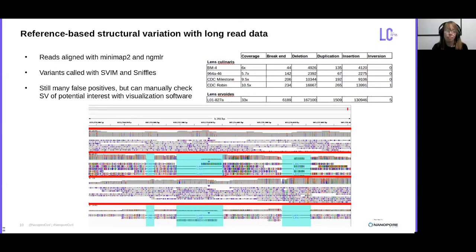Another thing we can do now that we have a more complete reference and access to long-read technologies is to examine structural variation within species by aligning long reads to the appropriate reference. Even at 5- to 10-fold coverage, we were able to identify a large number of good-quality variants, from large indels to breakpoints and duplications. Shown below is a visualization validating several deletions common to two of the four genotypes in the plot — at least two of them we would probably have been unable to find with short-read data entirely.